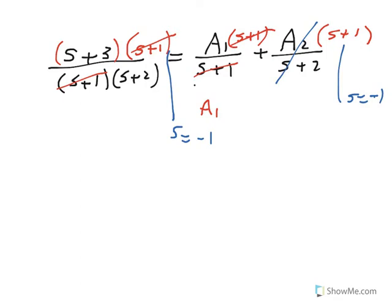a1 then becomes, if you plug in s equal minus 1 here and here, minus 1 and minus 1, you end up getting 2 over 1. So you get a1 equal 2.